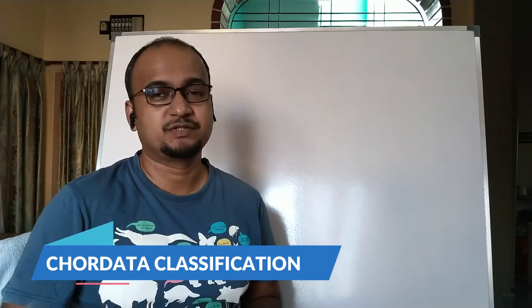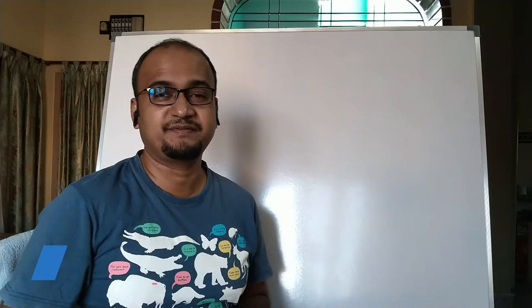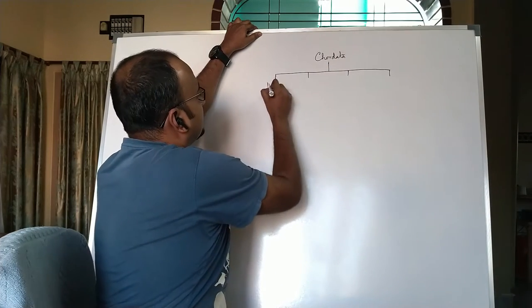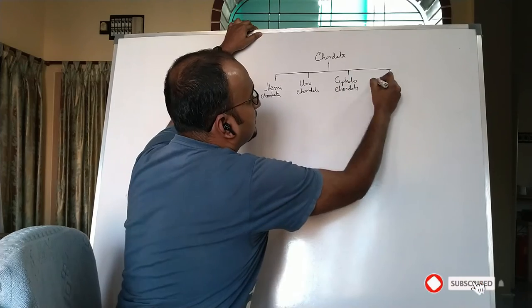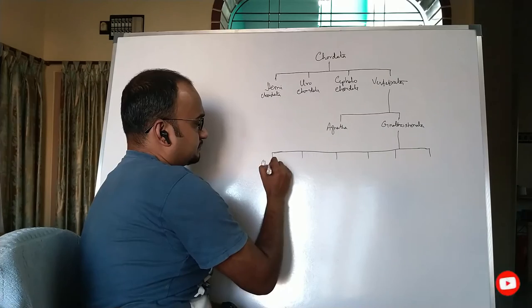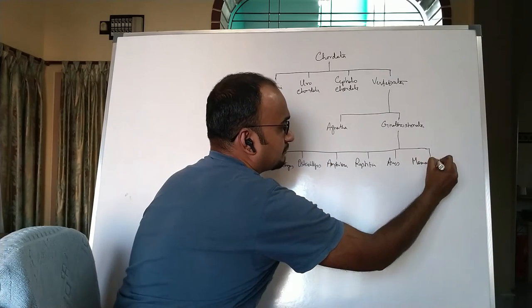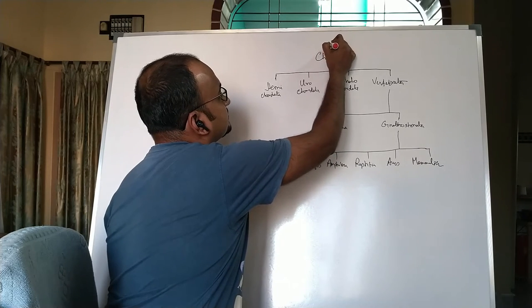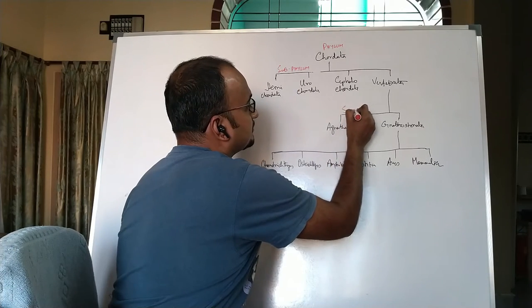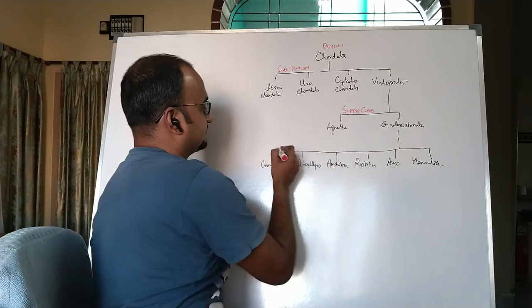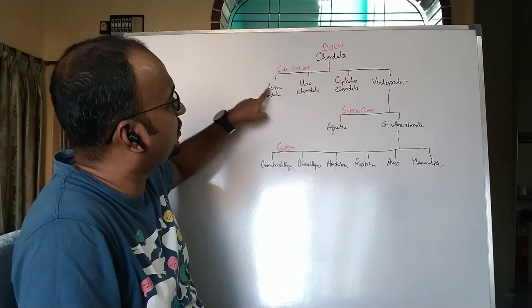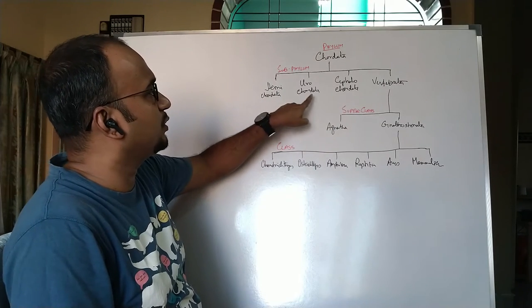Next, classification of phylum Chordata. First, let me draw the classification tree. The tree starts with phylum Chordata, which is divided into four sub phyla: Hemichordata, Urochordata, Cephalochordata, and Vertebrata.